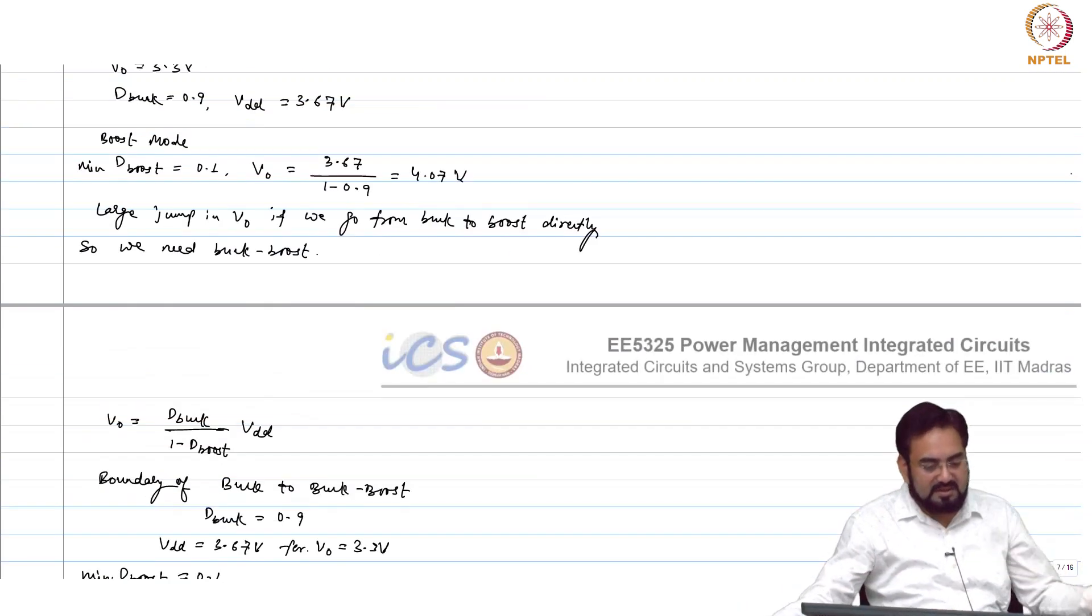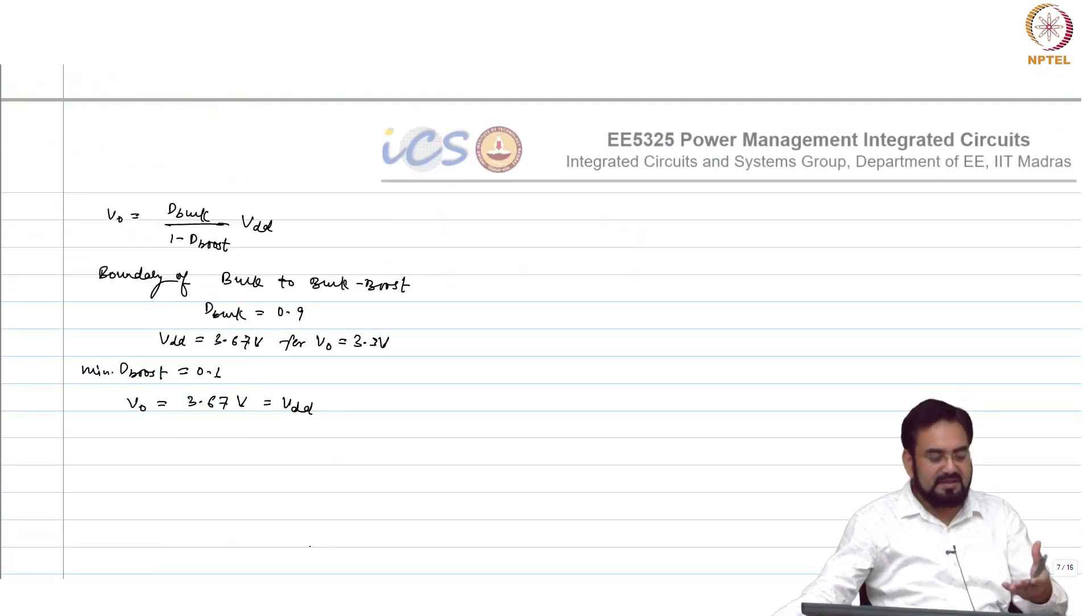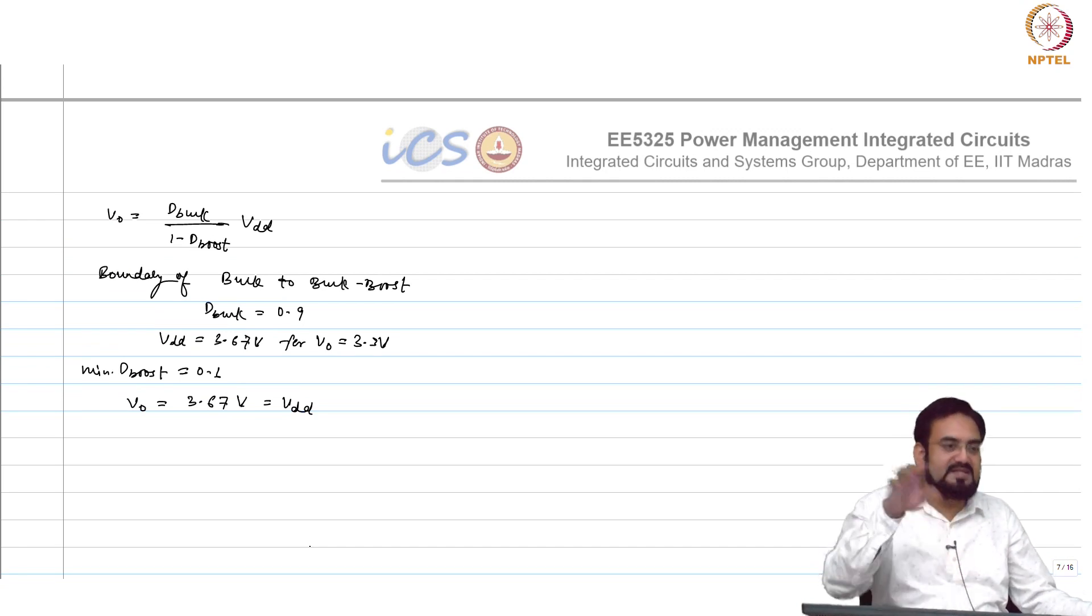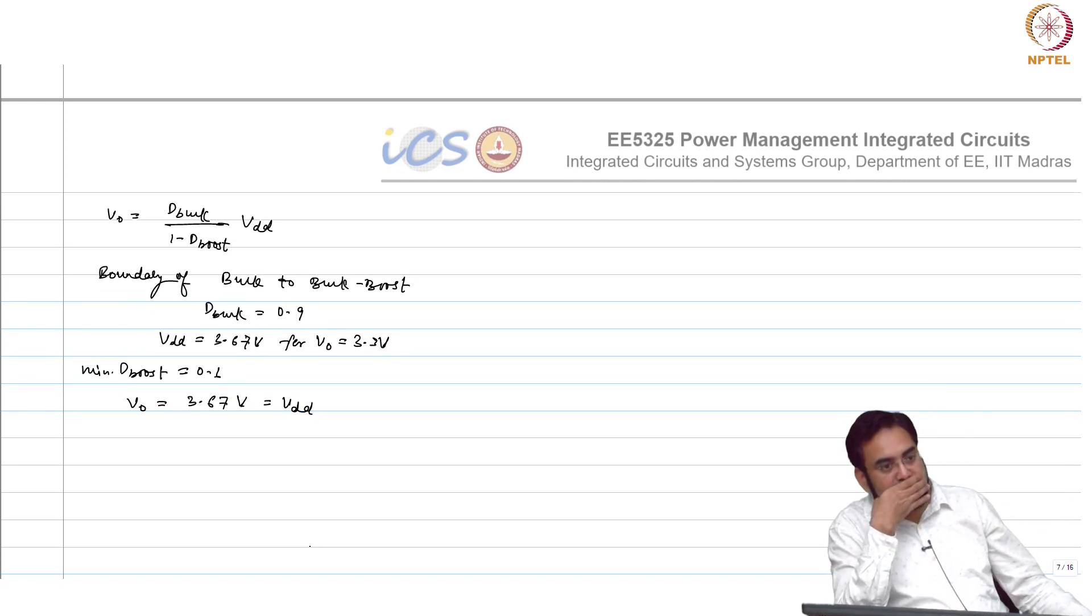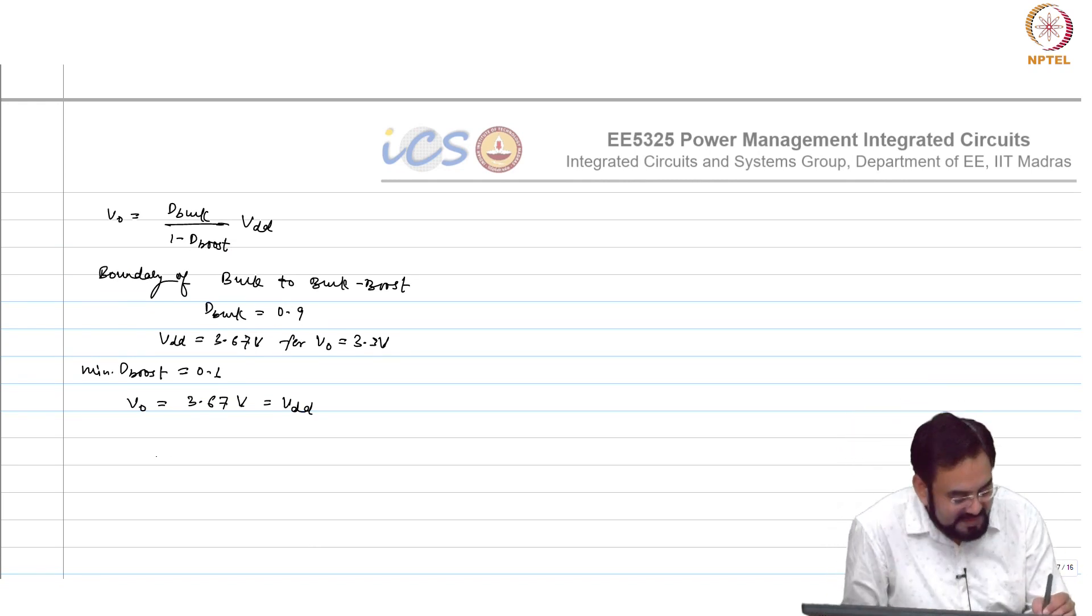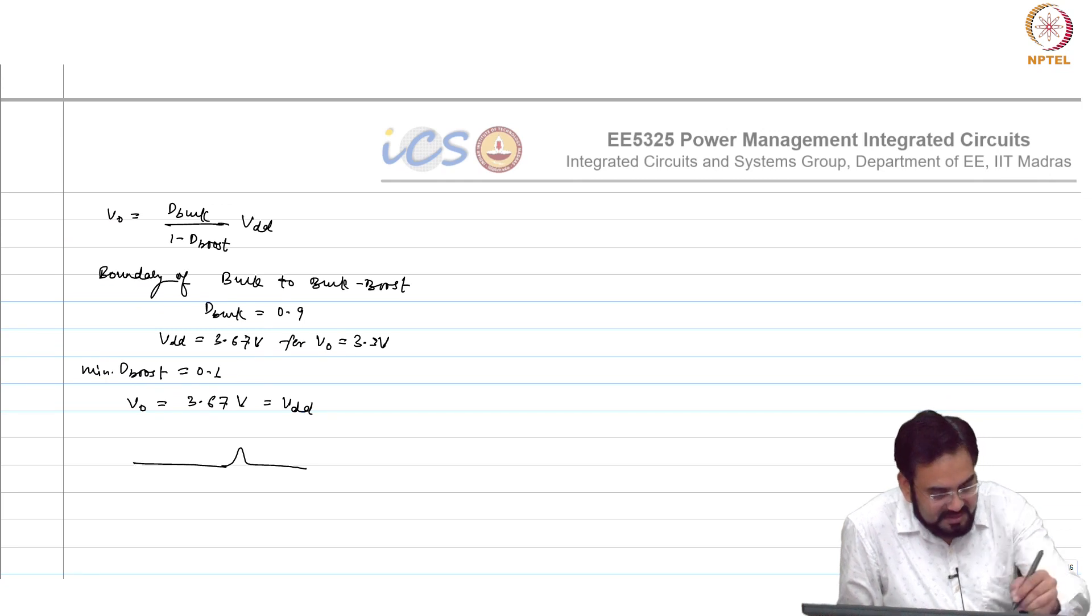There is the change was 700 millivolt, here it is roughly half of that. Still you have a jump, but it is not as large as previous one. So, how do we fix this? Your output will basically then jump and this is the one case.